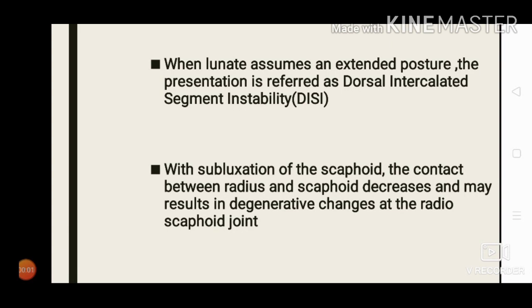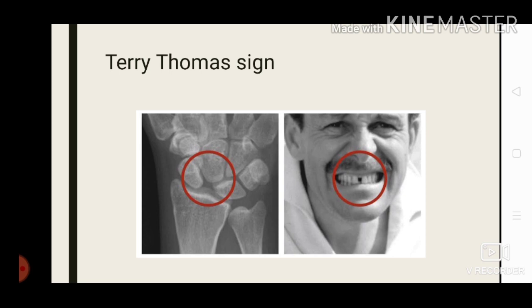When the lunate assumes an extended posture — with the scaphoid moving forwards and the lunate and triquetrum moving backwards — the presentation is referred to as Dorsal Intercalated Segment Instability, or DISI. With subluxation of the scaphoid, the contact between the radius and scaphoid decreases, which may result in degenerative changes at the radial-scaphoid joint.